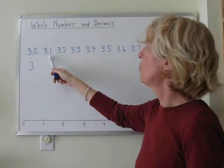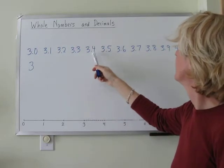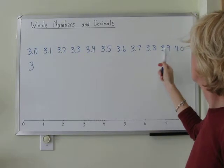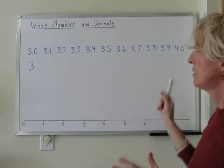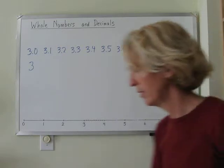That means that we're going to be taking ten little steps to get from three up to four. So we would write 3.1, 3.2, 3.3, 3.4, 3.5, 3.6, 3.7, 3.8, 3.9, 4. Ten steps. To get from one whole number up to the next whole number.